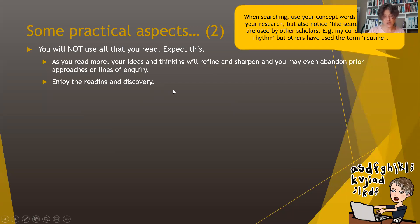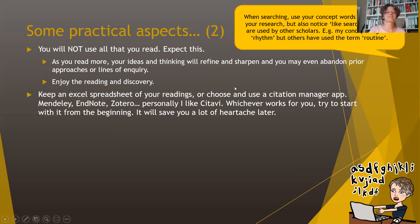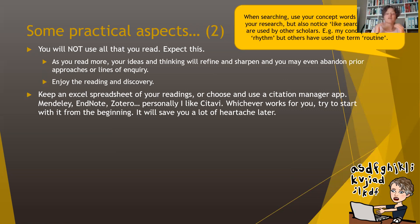Try to enjoy the reading and discovery — adopt a curious disposition. Scratch away at definitional differences like between 'beliefs' and 'attitudes'; it's quite fun, even if time-consuming. Keep an Excel spreadsheet of your readings, or choose early a citation manager app — Mendeley, Endnote, Zotero. I personally like Stadi, which is less known in South Africa but very elegant. Whatever works for you, start with it from the beginning. It will save you a lot of heartache later when you have 200 papers and can't remember which ones you've read, which you're using, and which you want to quote from.